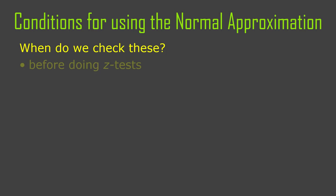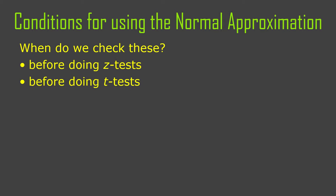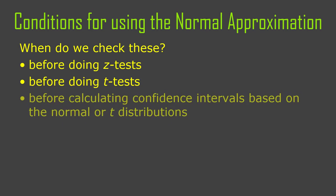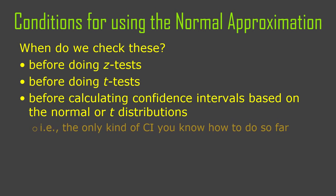So when do we check these? Before we do our tests. Sometimes we forget and do them afterwards, and then you may have to throw out the results and not report them. We also check them before we calculate any confidence intervals — any time before we use the normal approximation, we need to check these conditions, because these are conditions for using the normal approximation.